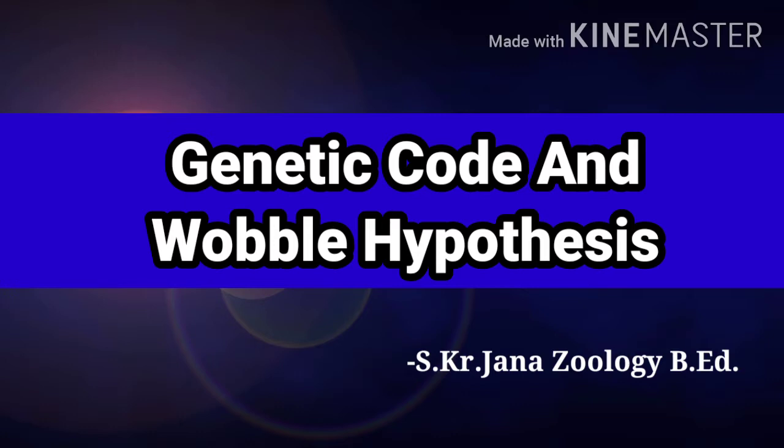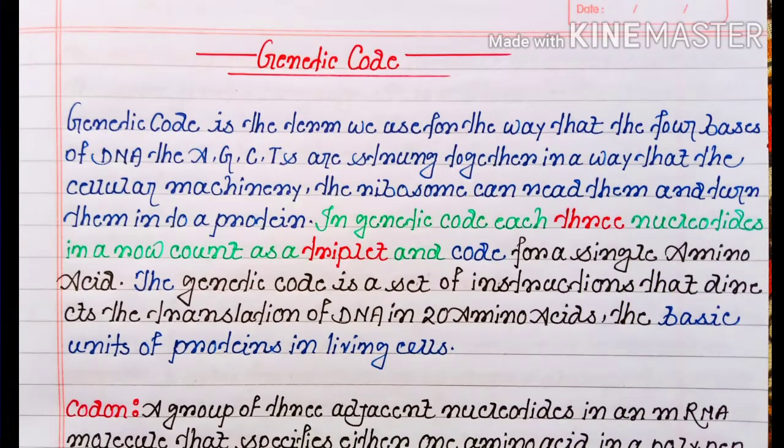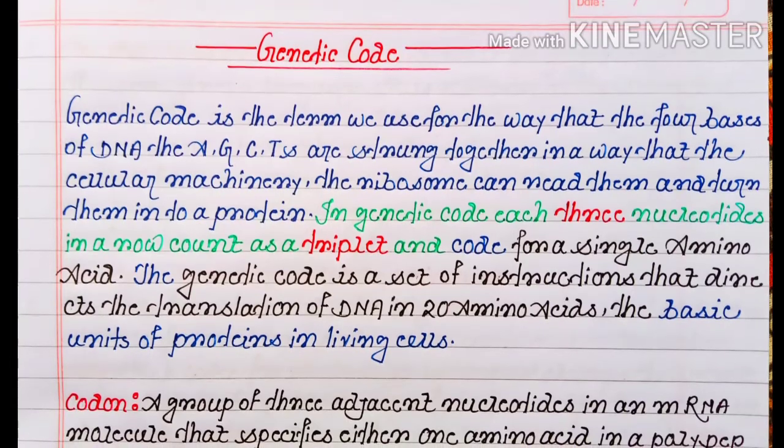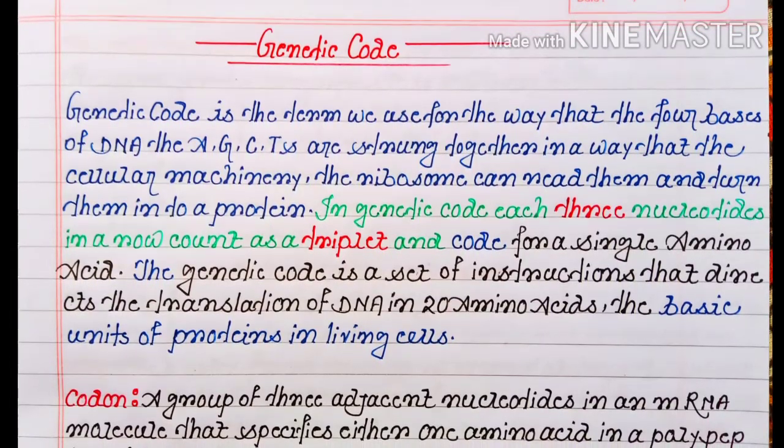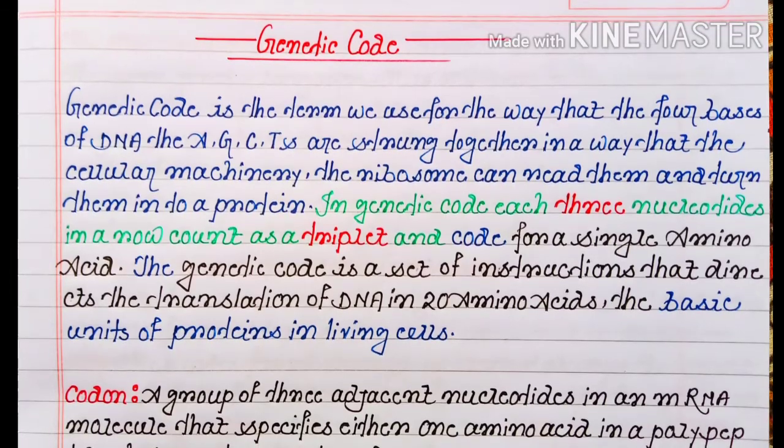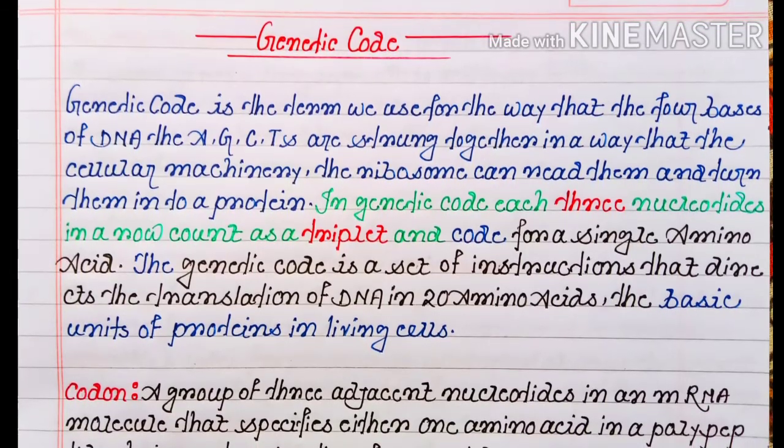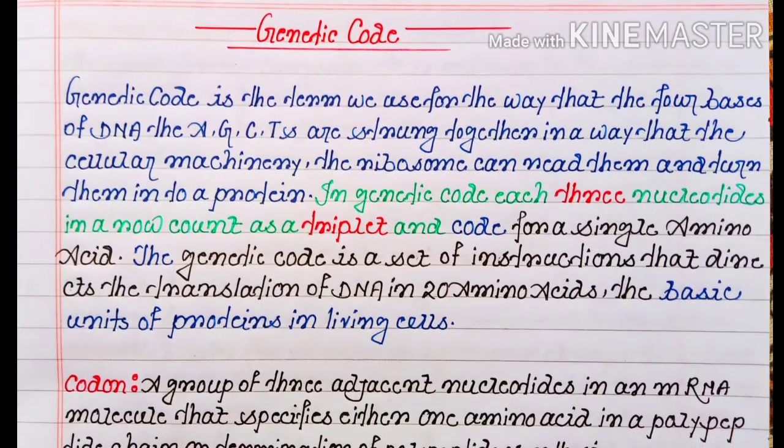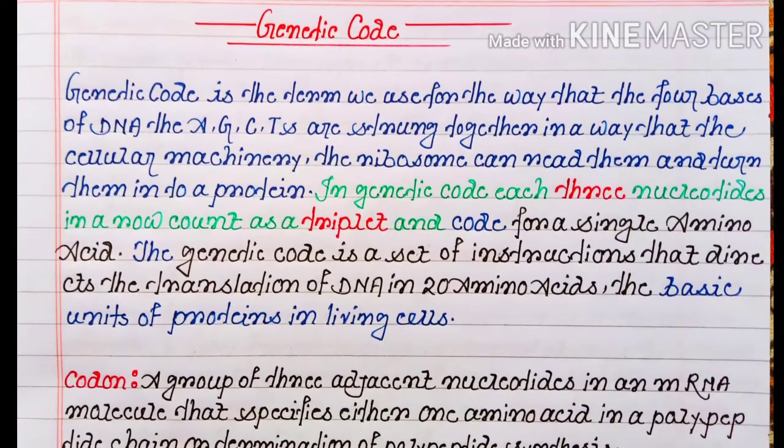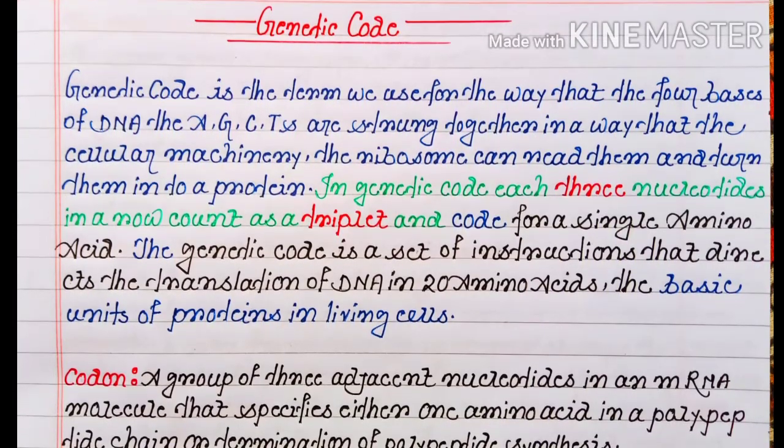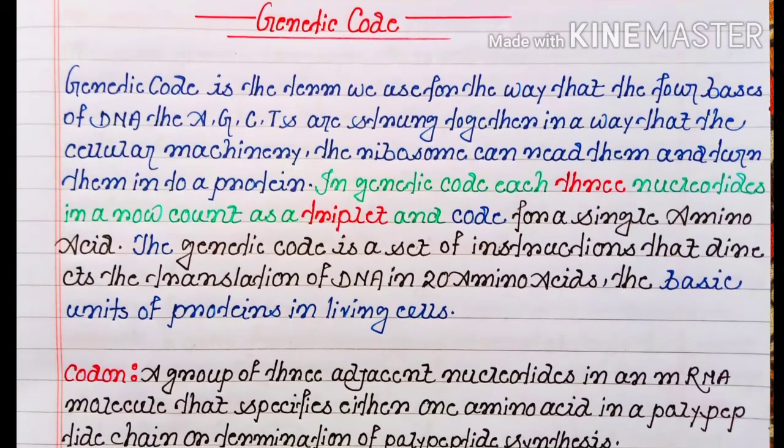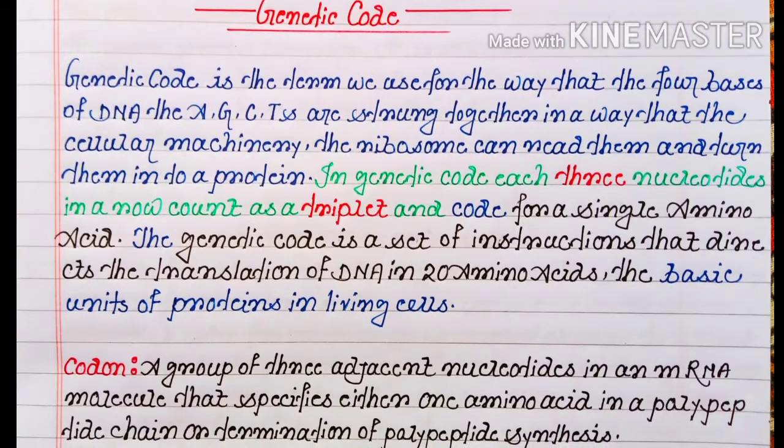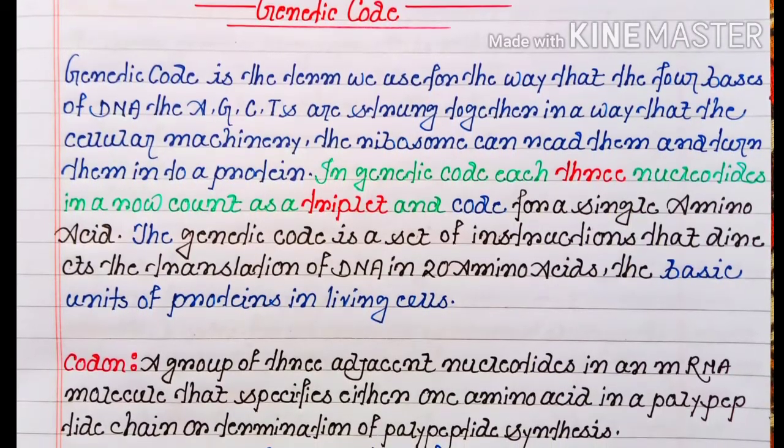So now let's start. At first, what is genetic code? The genetic code is the term we use for the way that the four bases of DNA—the adenine, guanine, cytosine, and thymine—are strung together in a way that the cellular machinery, the ribosome, can read them and turn them into a protein.